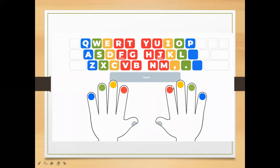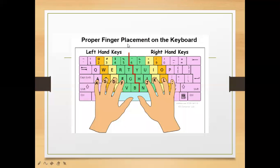For your right hand: your index finger goes on the letters H and J, your middle finger goes on the letter K, your ring finger goes on the letter L, and your baby finger goes on the key next to the letter L. This is how you place your left hand and your right hand on the keyboard.